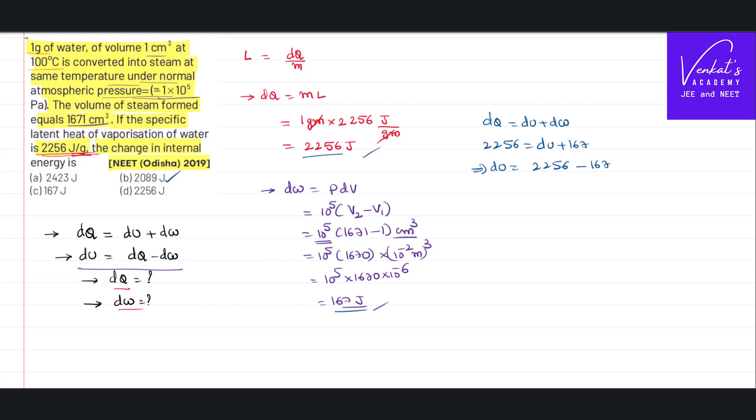So though the problem looks like a lengthy problem, it is not actually a lengthy problem. It is a very simple problem. We only need to know how to proceed and solve the problem based on first law of thermodynamics. First I found dQ, then I found dW, and then I substituted them in the formula to get to the answer.